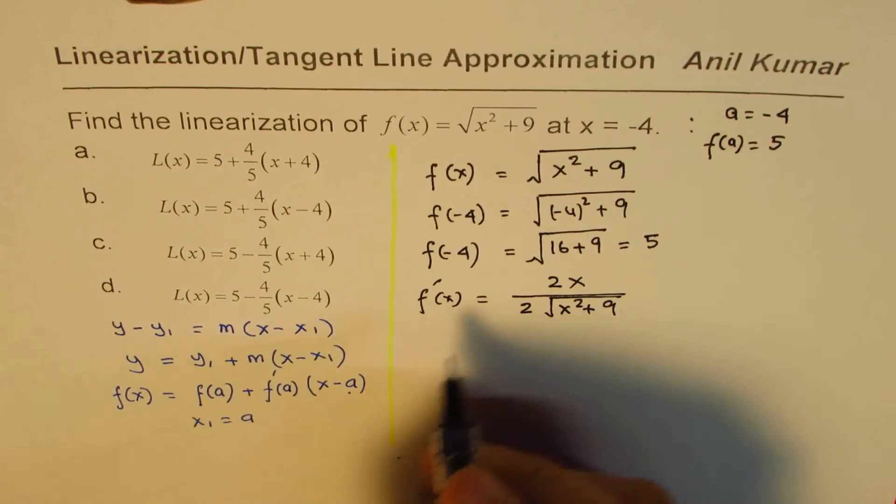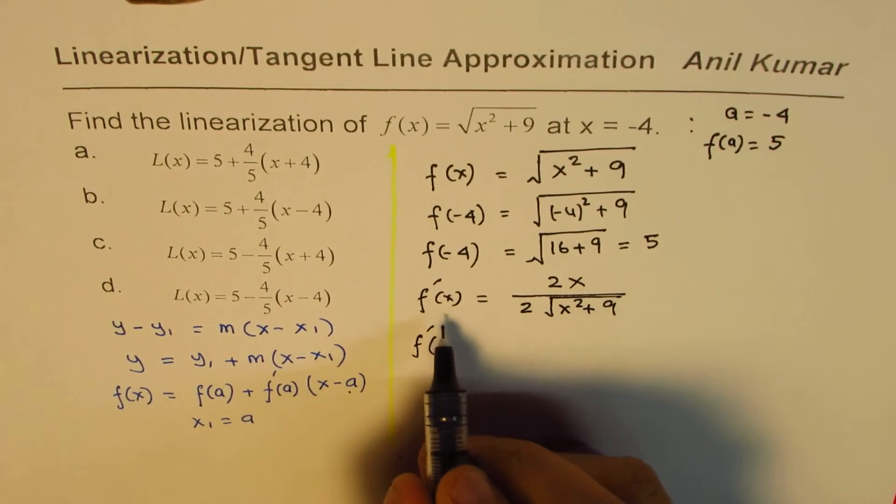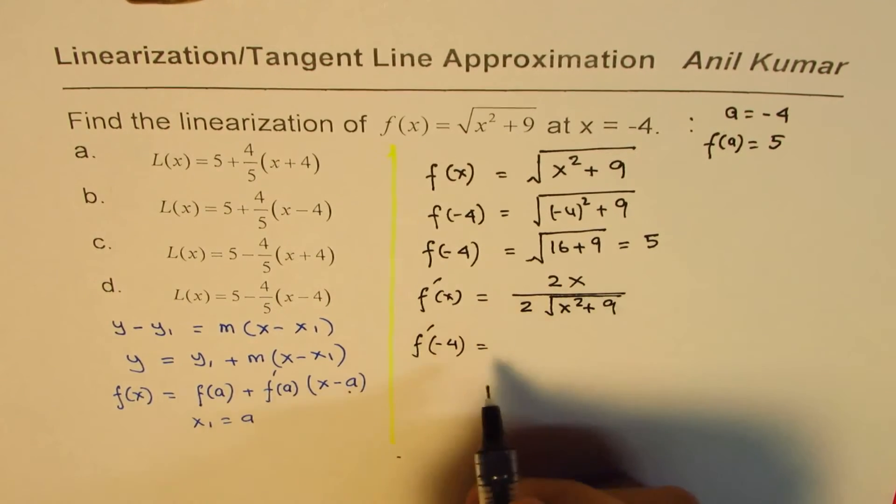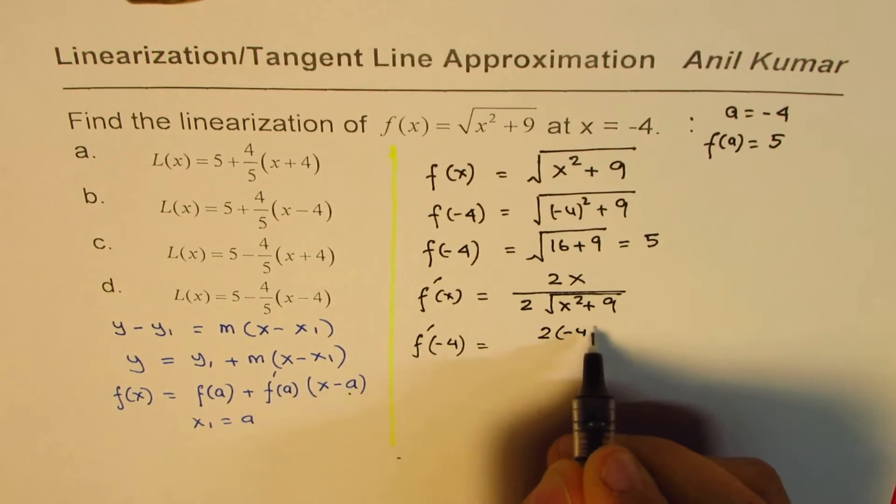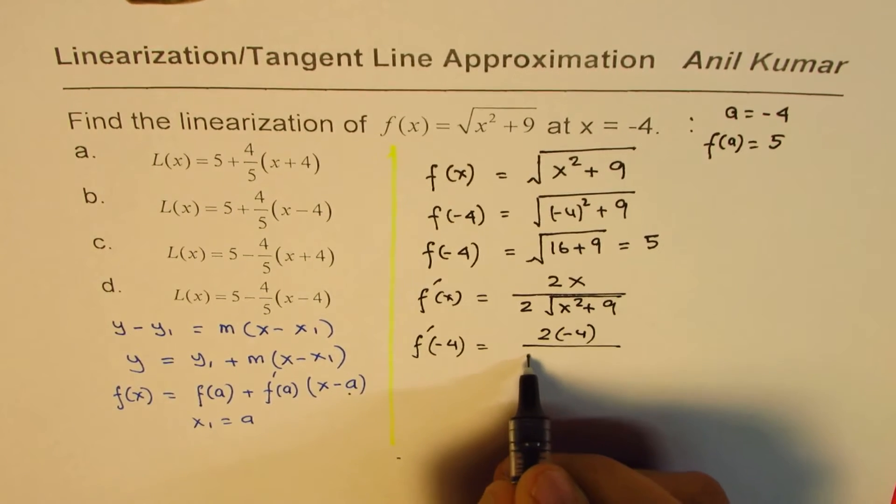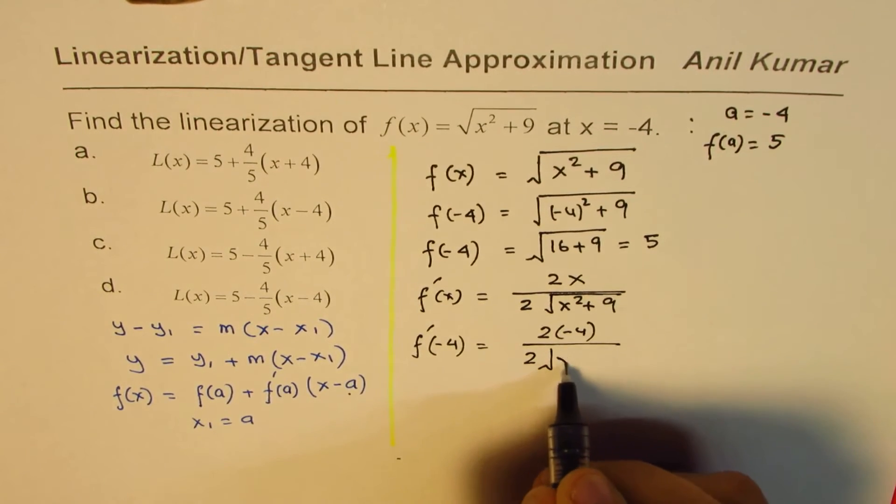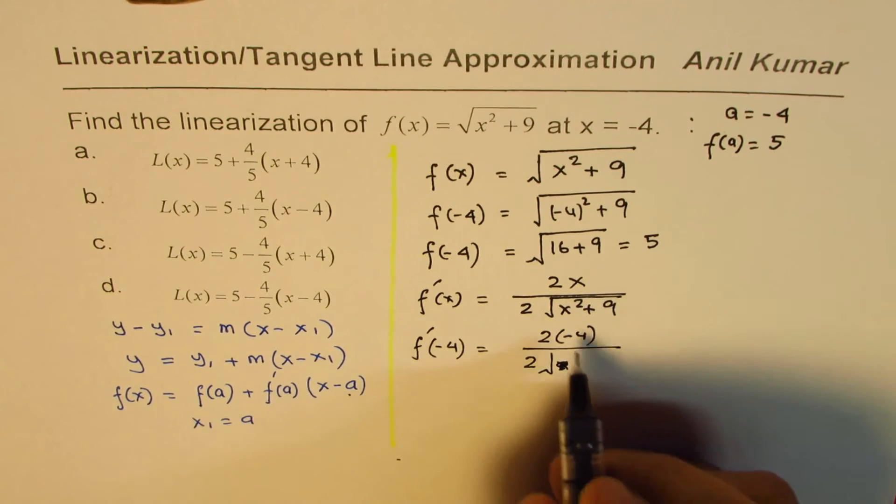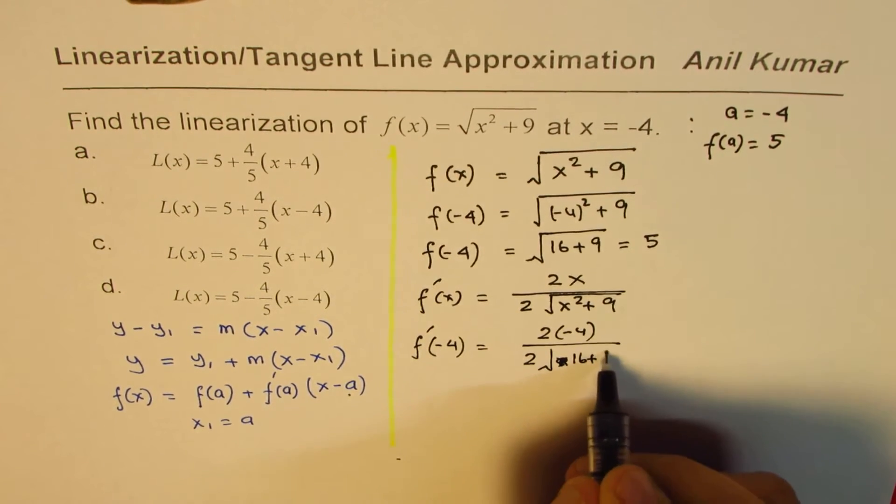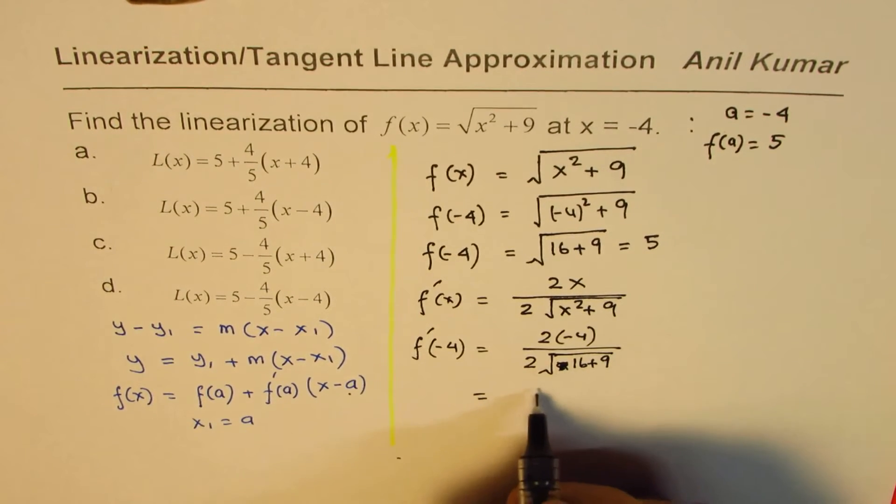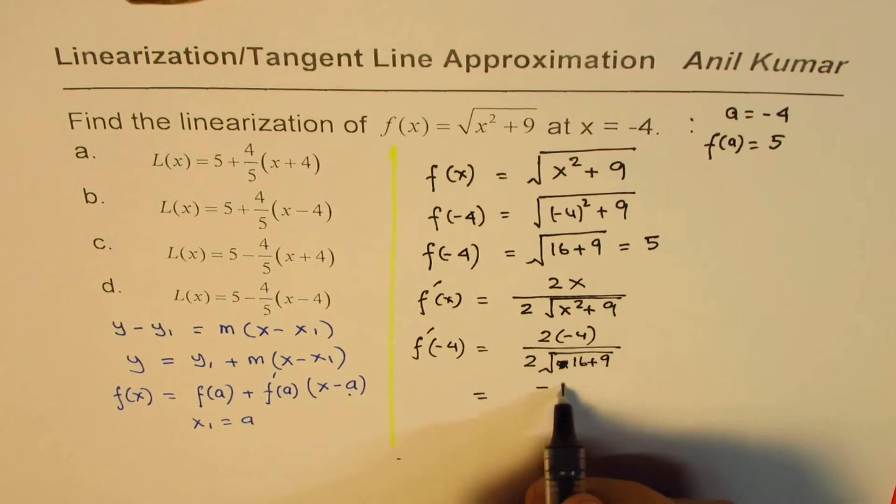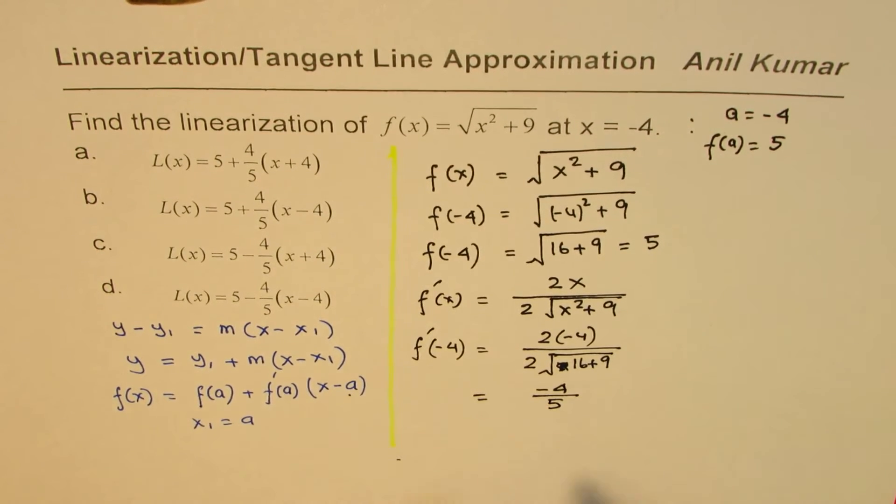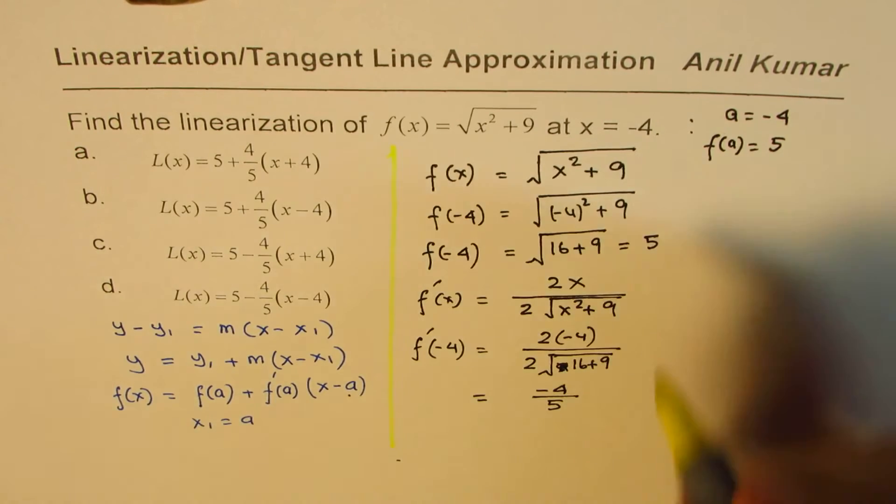Now the value of this slope of the tangent line at x equals to minus 4 will be, we'll substitute minus 4 here. So we get 2 times minus 4 over 2 square root of minus 4 squared, we know 16 plus 9. And that gives us 2 and 2 cancels. So we have minus 4 over, and this is 5. So we get the derivative at this point.